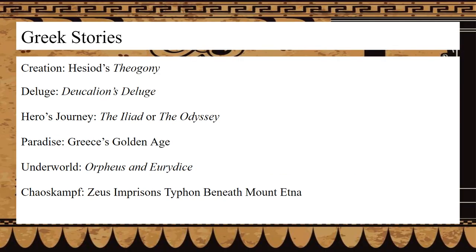Next is Greek mythology. The best creation myth comes from Hesiod's Theogony — the entire poem is actually a creation myth. It opens with the deity Chaos, who gave birth to Gaia the earth, Tartarus (basically hell), Nyx the night, Erebos the primordial being of death, and Eros the primordial being of love.